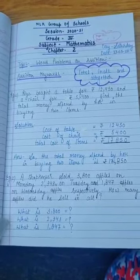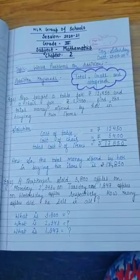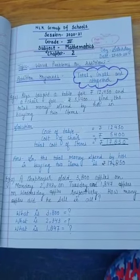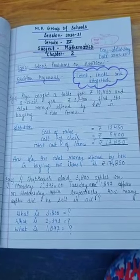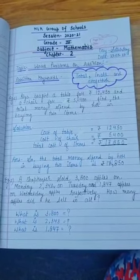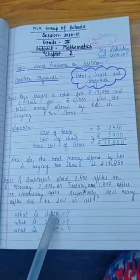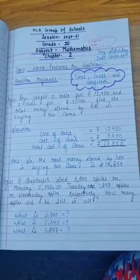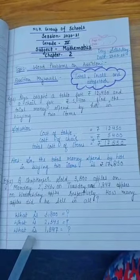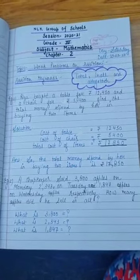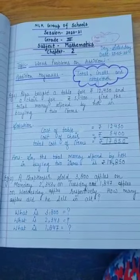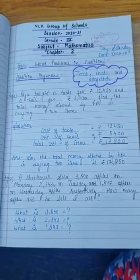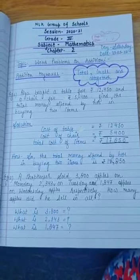As I told you before, to understand the problem and know what to write as statements, ask these questions: What is 3,800? What is 2,343? What is 1,847? The answers will help us form statements for the solution.